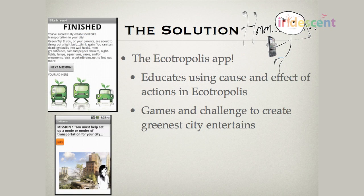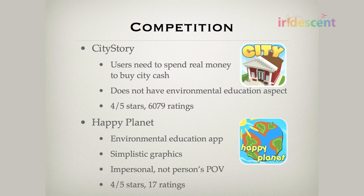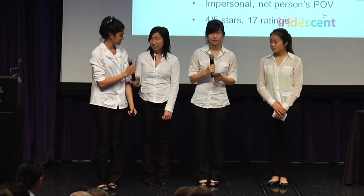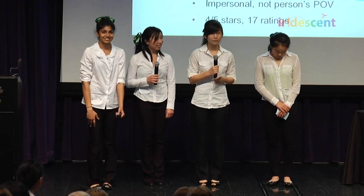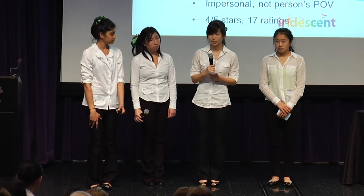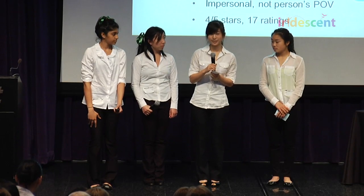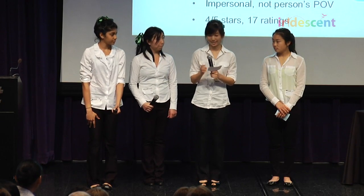The first step is information. With our app we use a game format so users learn while playing. Looking through app markets, we found two apps with similarities to ours: City Story and Happy Planet. Ecotropolis has both the city-building aspect from City Story and the environmental education aspect from Happy Planet. However, our graphics are more sophisticated, as we are not targeting only children. In addition, Ecotropolis is more relevant to reality — players make decisions in the game that people make in real life as well.